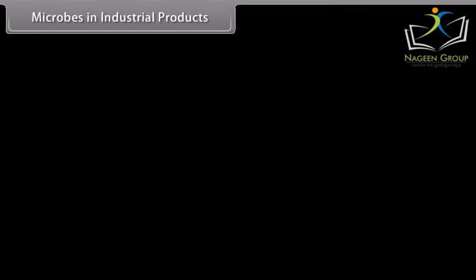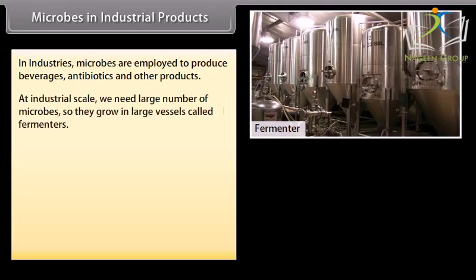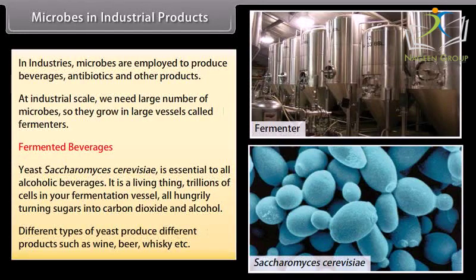Microbes in industrial products. In industries, microbes are employed to produce beverages, antibiotics, and other products at industrial scale. We need a large number of microbes, so they grow in large vessels called fermentors. Fermented beverages: Saccharomyces cerevisiae is essential to all alcoholic beverages. It is a living thing — trillions of cells in your fermentation vessel, all hungrily turning sugars into carbon dioxide and alcohol. Different types of yeast produce different products such as wine, beer, and whiskey.